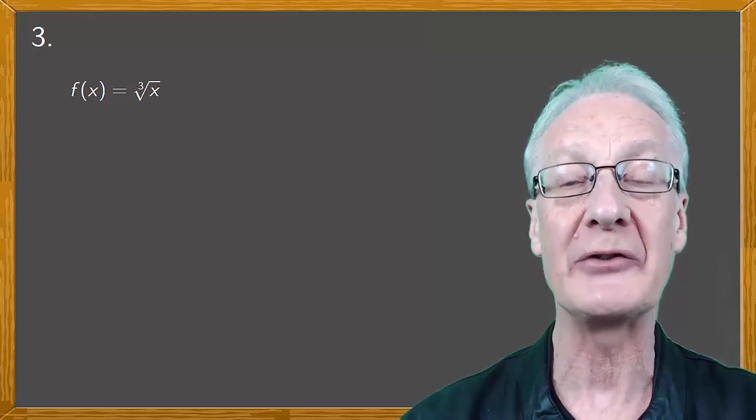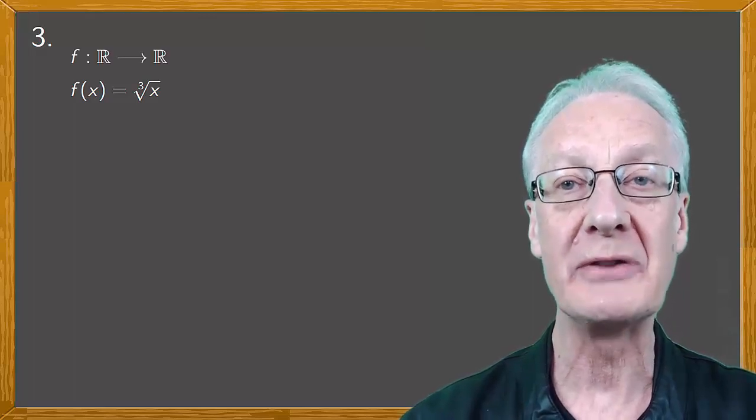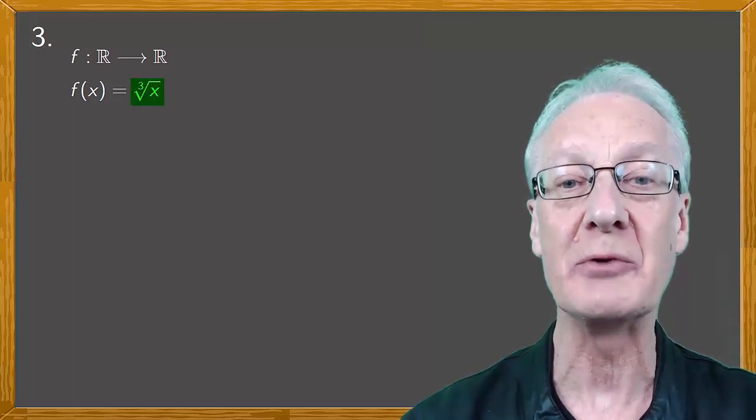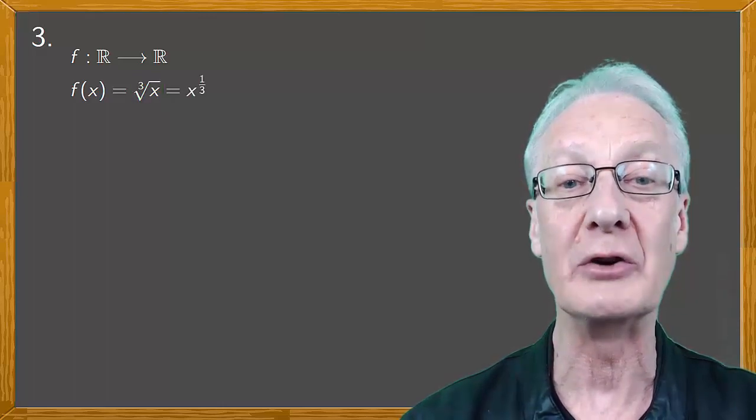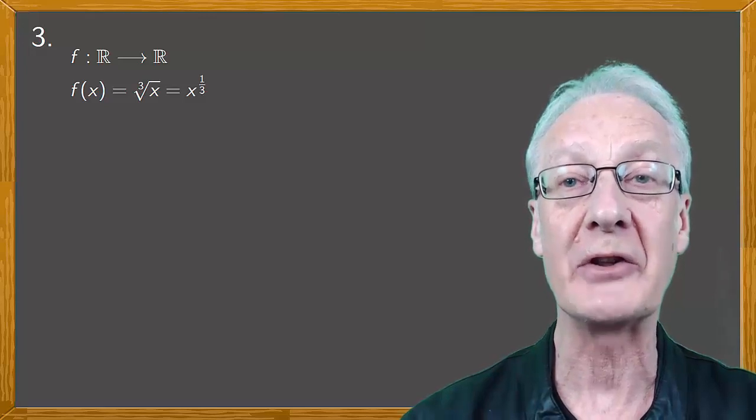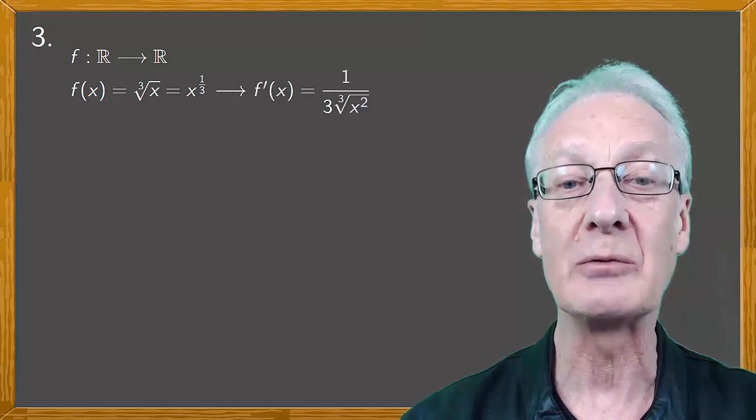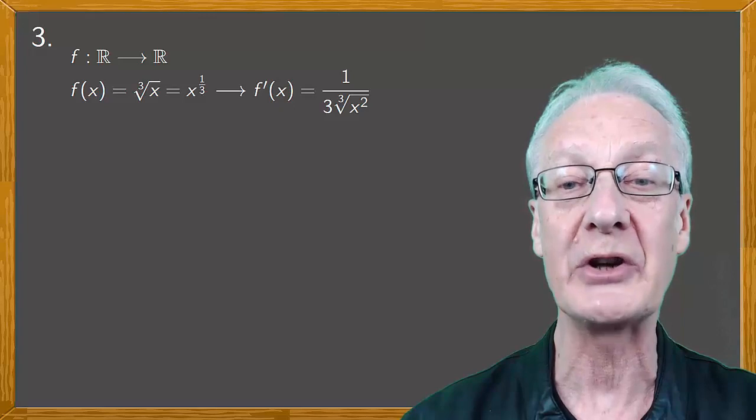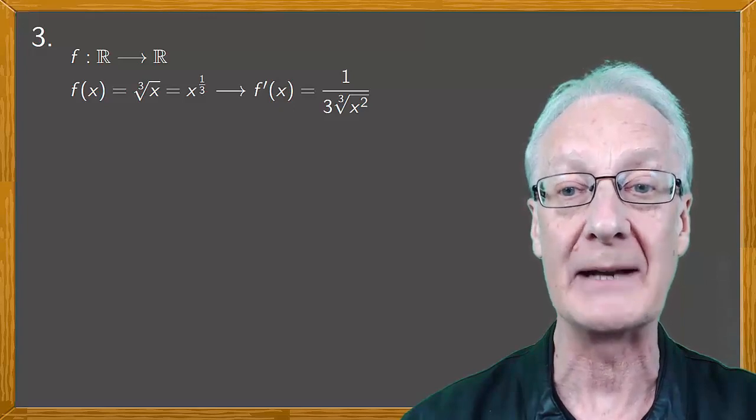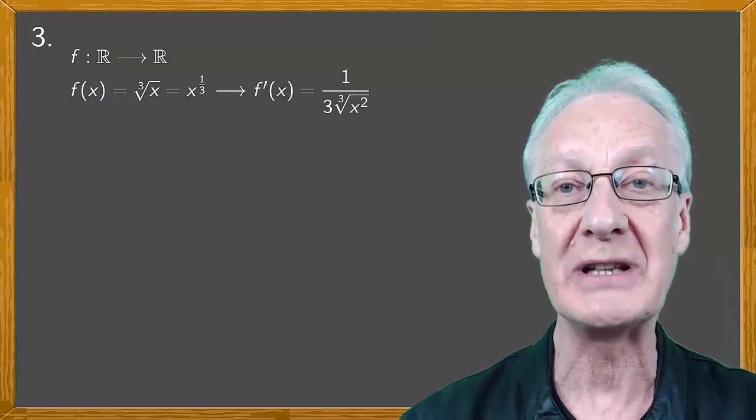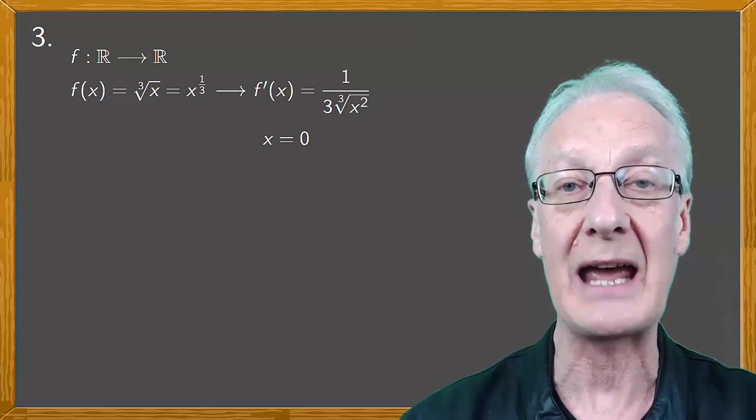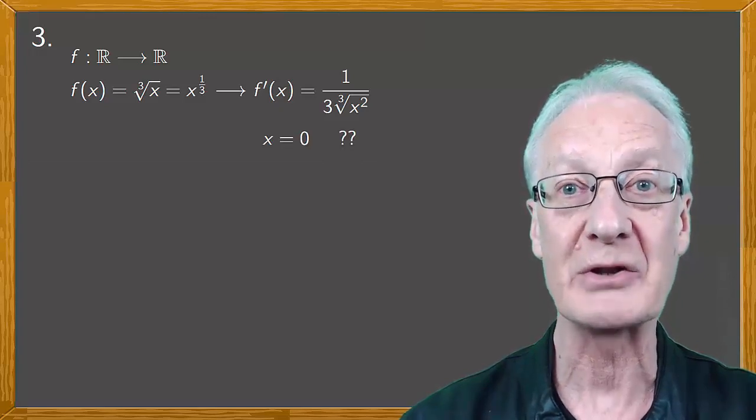Consider for example the function f(x) = ∛x, the domain of which is R. To obtain the derivative we express the cube root as a fractional exponent, and then apply the well-known rule for differentiating this. The result is that f'(x) = 1/(3∛(x²)). And what do we find? The expression for the derivative isn't defined at x = 0. So what's going on?